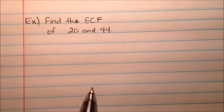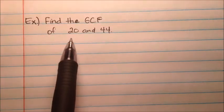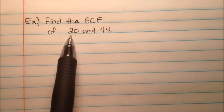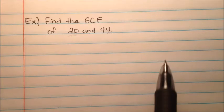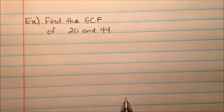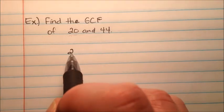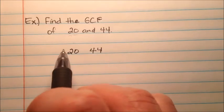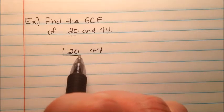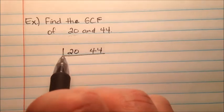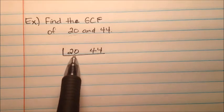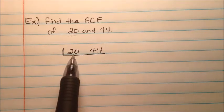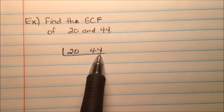Let's find the greatest common factor of two numbers. In the first example, we'll do 20 and 44. I'm going to put the two numbers next to each other, 20 and 44, and do a little division here, asking myself: are there any factors that come out of both 20 and 44?